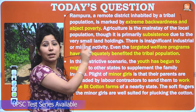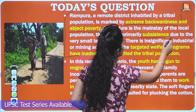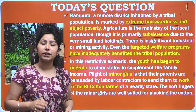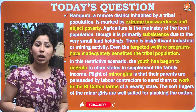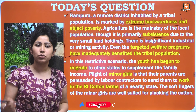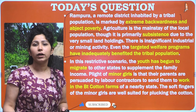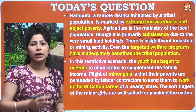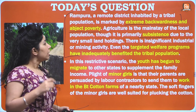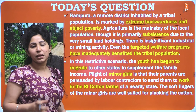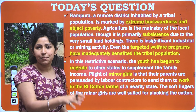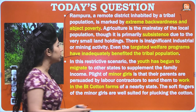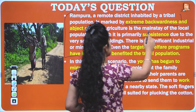The second highlighted term is subsistence agriculture — agriculture practiced on very small land patches by families for their own consumption. Here you can introduce reforms to improve that subsistence agriculture or how agriculture can be developed. This is your second key point to address.